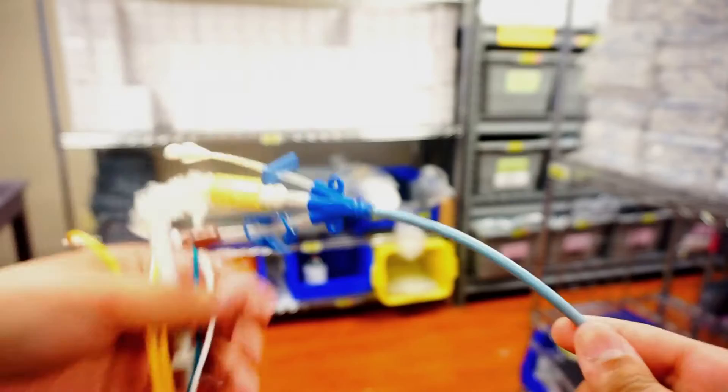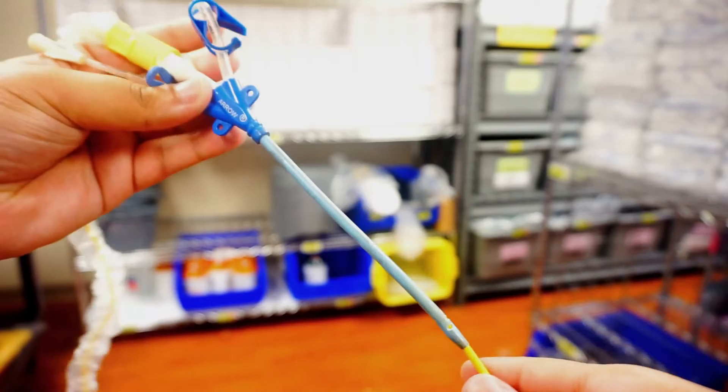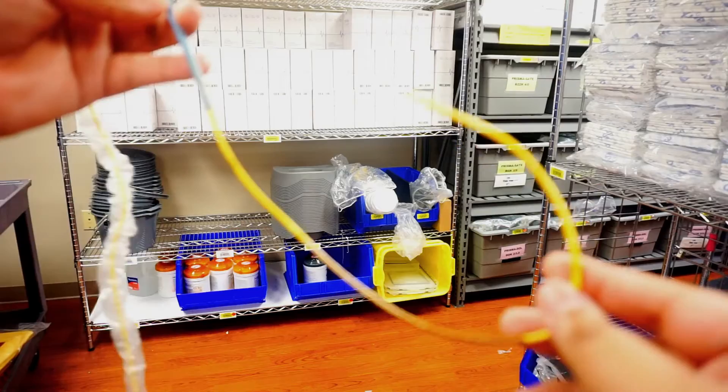Whenever you have the Swan in the cordis, it's going to be going through a central vein into the right atrium, and then it will go into the right ventricle, and then the end will be floated into the pulmonary artery.